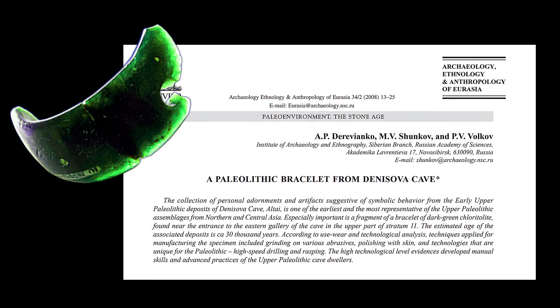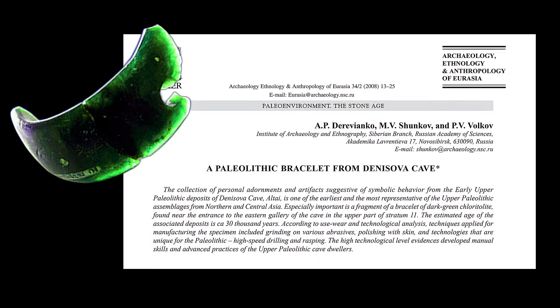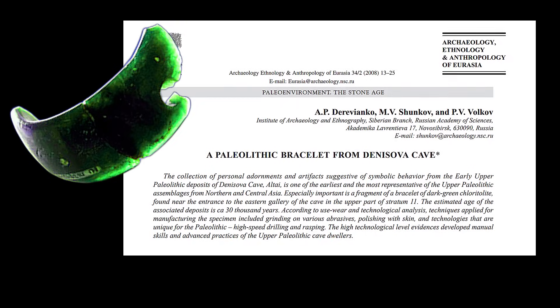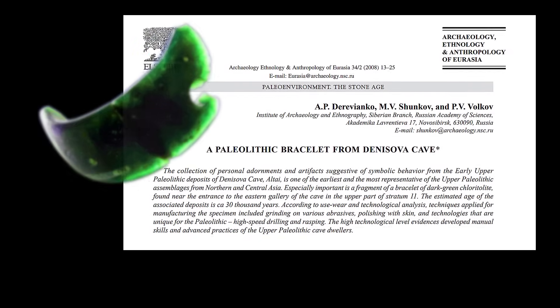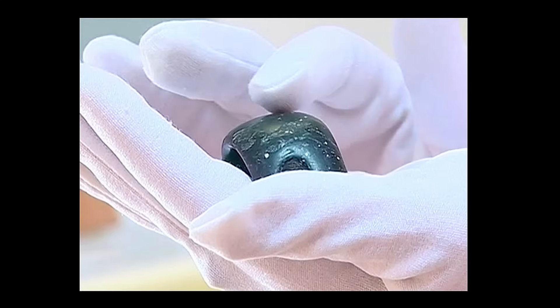The bracelet's surface displays smoothness in areas that suggest it was worn frequently, likely on the wrist. Polishing from contact with the skin and clothing indicates that the bracelet was not merely a ceremonial object but a personal adornment used in daily life or significant events.